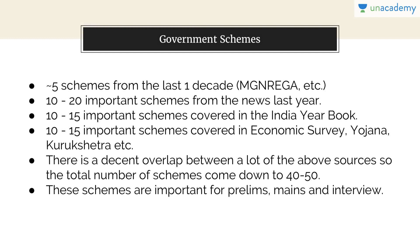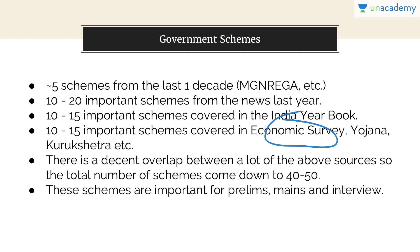Around five important schemes will come from the last decade that are independent of the government. Ten to twenty important schemes from last year's news like Jan Dhan Yojana and demonetization. Ten to fifteen schemes are covered in the India Yearbook — go through their summaries. Ten to fifteen important schemes are covered in the economic survey and Yojana. Reading Kurukshetra has a very bad ROI. Total schemes will be around 40 to 50, and you'll need to read more to arrive at them.